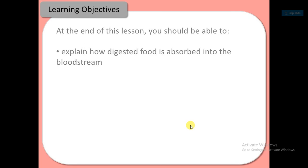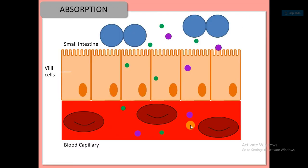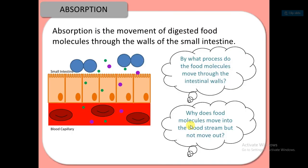How is digested food absorbed into the bloodstream? Absorption occurs in the small intestine via villi cells and blood capillaries. Food from the small intestine moves towards the villi cells and from there it is absorbed into the blood capillaries. Absorption is the movement of digested food molecules through the walls of the small intestine.